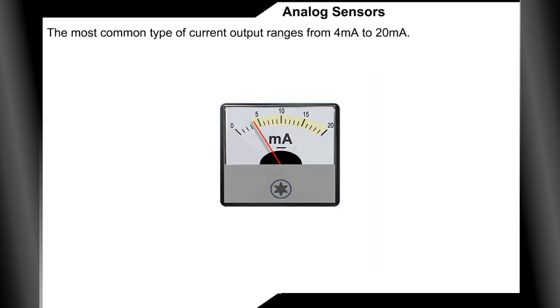The most common type of current output ranges from 4 milliamps to 20 milliamps.